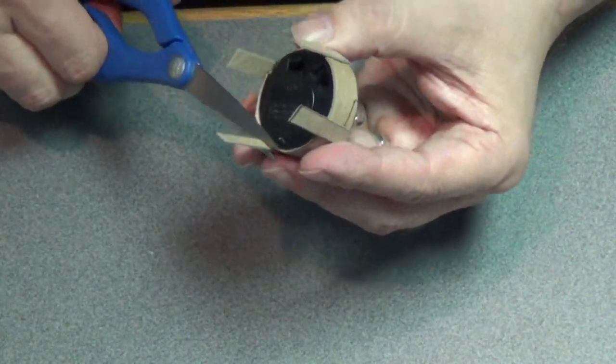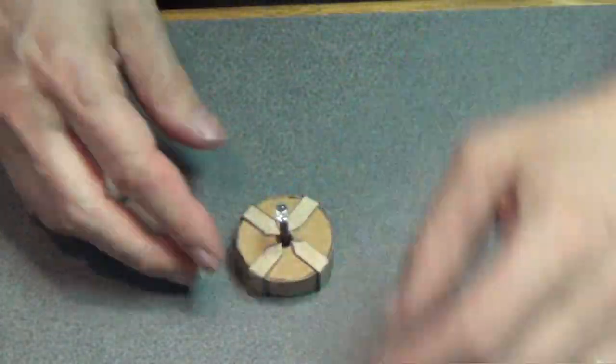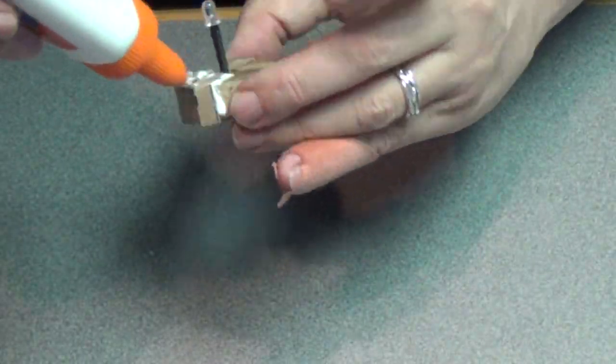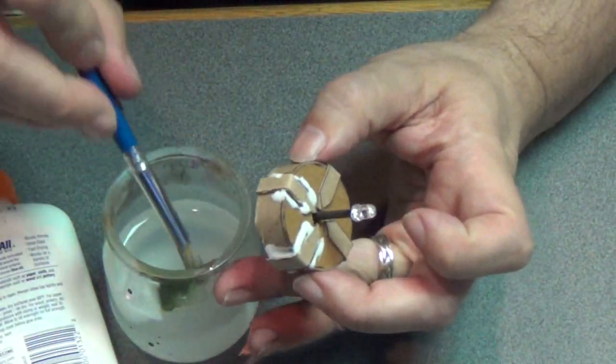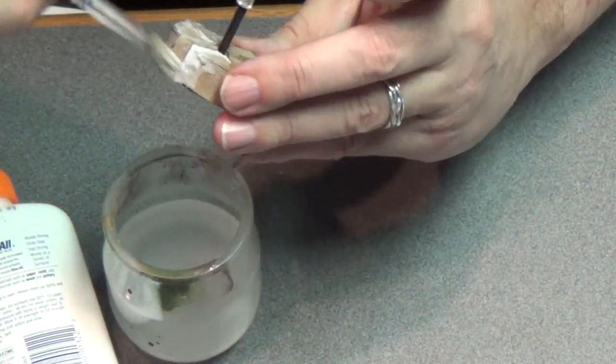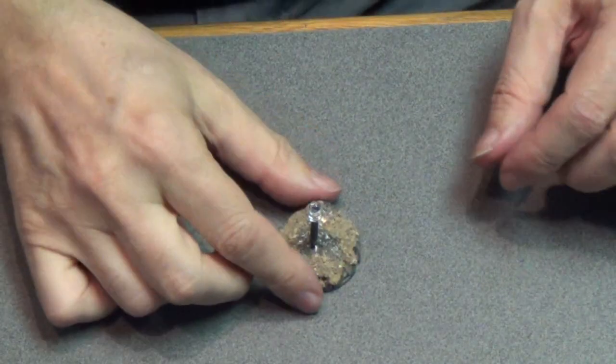Now I need to trim the excess off. Let's use some scissors. Trim that off. And we are good to go. I'm going to use some white glue just to make sure that these details are secure. It'll also reinforce it a little bit. Let's put some white glue on there.